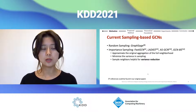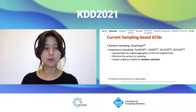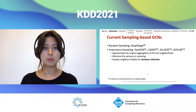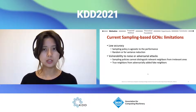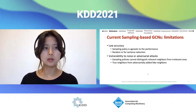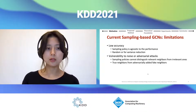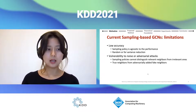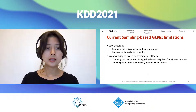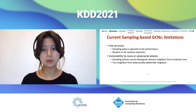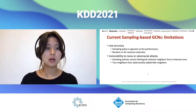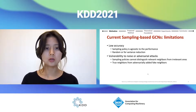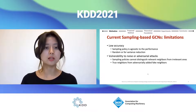Importance sampling methods try to approximate the original aggregation over the full neighborhood by minimizing variance in sampling — giving high sampling probability to neighbors helpful for variance reduction. These approaches have two limitations: first, low accuracy, because sampling policies, whether random or variance-reduction based, are agnostic to task performance. Second, they are vulnerable to noise and adversarial attacks, since sampling policies cannot distinguish relevant neighbors from irrelevant ones — they only check whether a neighbor helps reduce variance, not whether it is a true or adversarially added fake one.